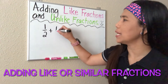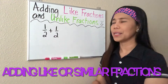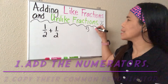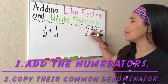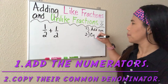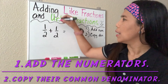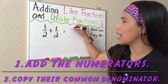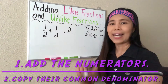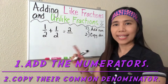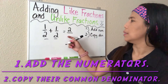So, one-half plus one-half. Remember, we have the same denominators. The first step is that we just add the numerators and then we copy their denominators. So, one plus one will be two, and then since they have the same denominators, we do not add them — we just copy. So that gives us two-halves.